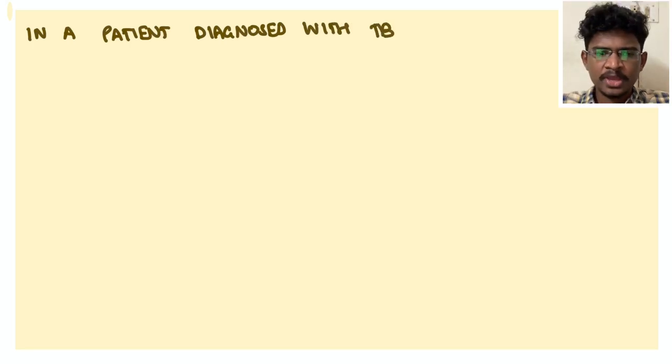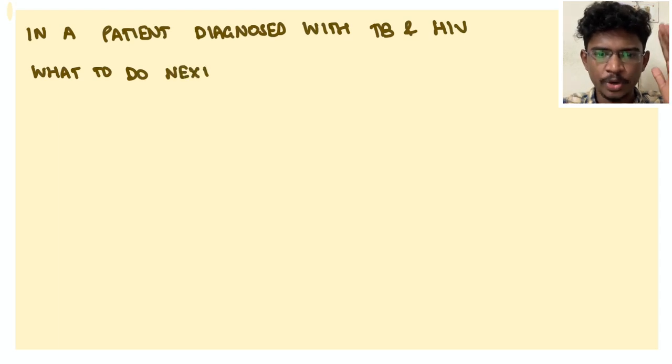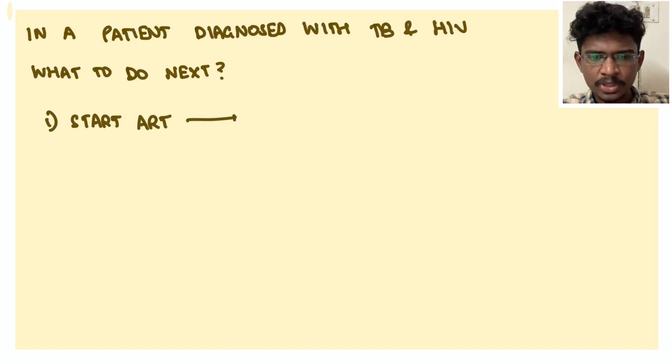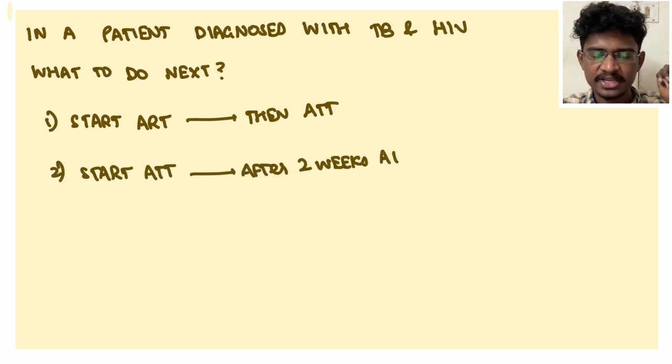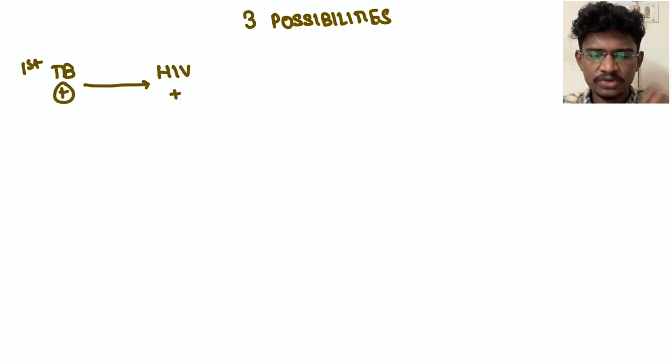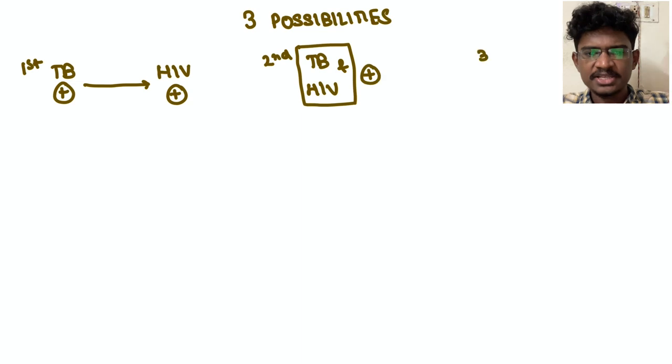Next, in a patient diagnosed with TB as well as HIV simultaneously, what are you going to do? Are you going to start ART first and then ATT? Or first ATT, after two weeks then ART? Or start ART and ATT therapy simultaneously? Let's see the possibilities. First, patient has been diagnosed as TB then he has been diagnosed as HIV. So here what will you do? If the patient is diagnosed with TB initially, obviously start with ATT treatment.